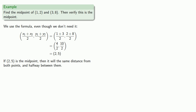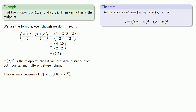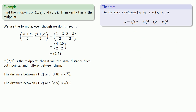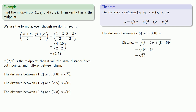First, let's find the distance between (1, 2) and (3, 8). Using our distance formula, we find that distance is the square root of 40. The distance between (1, 2) and (2, 5) is the square root of 10. And the distance between (2, 5) and (3, 8) is also the square root of 10. So (2, 5) is the same distance from both (1, 2) and (3, 8). And if we simplify, the square root of 40 is in fact 2 times the square root of 10, so (2, 5) is halfway between (1, 2) and (3, 8) — which confirms that (2, 5) is indeed the midpoint.